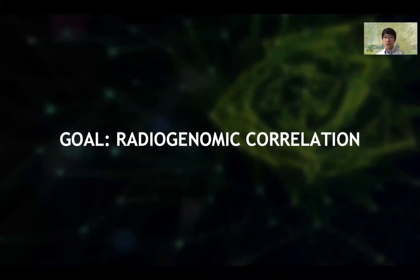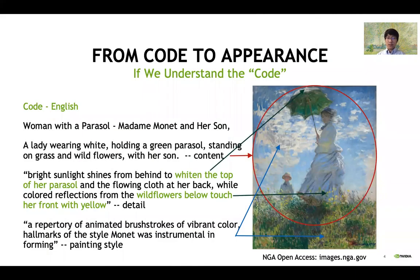So let me move on to take a look at the problem itself: radiogenomic correlation. Essentially, this is a code-image pair question, and the very root of the whole problem is whether we understand what the specific code is telling us. Take this famous Monet for example — the code here is English language. We can have different descriptions from different perspectives, and if we understand the code, we will be able to correctly map this information to the image itself. From the whole content perspective, we can tell that the painting is about a lady and a boy. From the detail description, we can pinpoint the parasol top and the white flowers below. And from the painting style description, we can appreciate the brush strokes and the color. Each code relates to different characteristics of this painting, and all of us can understand their correlation, because we understand the context of the code itself, which is English.